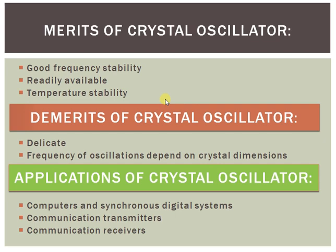Looking at the merits, demerits, and applications of the crystal oscillator: crystal oscillators have good frequency stability, are readily available in nature, are less bulky, inexpensive, and lighter in weight. The temperature stability of the crystal is very good — the frequency change due to temperature variation is very small. Good frequency stability means that frequencies up to 10 MHz can be constructed with ease.